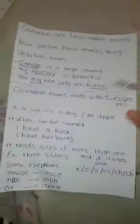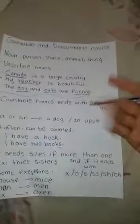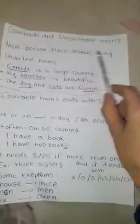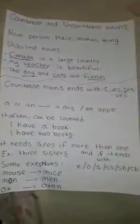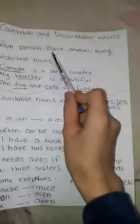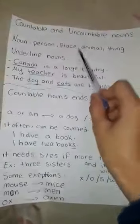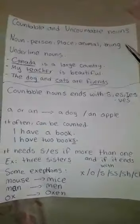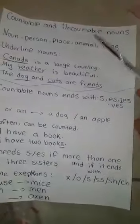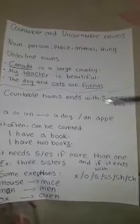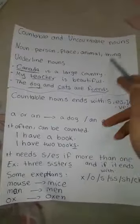First I'm going to explain the noun. A noun is a person, place, animal, or a thing. A person, like a teacher or a student. A place, like a hotel or a house. An animal, like a kangaroo, a monkey, a cat, or a dog — any animal. A thing, like an object.